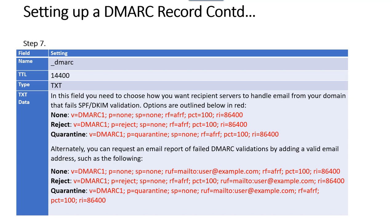Step seven: as you can see, the DMARC time to live is 14,400, and the record type is a TXT record. In this field you need to make some choices on how you want your server to handle email from your domain that fails SPF and DKIM validation. The options are outlined below — the choices are none, reject, or quarantine. A chart will also be posted below this video for easier reference.